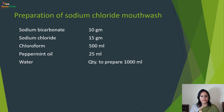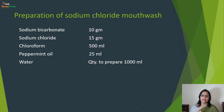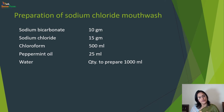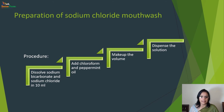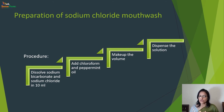Now go through this formula for sodium chloride mouthwash. Ingredients: sodium bicarbonate, sodium chloride, chloroform, peppermint oil and water. Procedure: dissolve sodium bicarbonate and sodium chloride in 10 ml of water, then add chloroform and peppermint oil, make up the volume, and then dispense the solution.